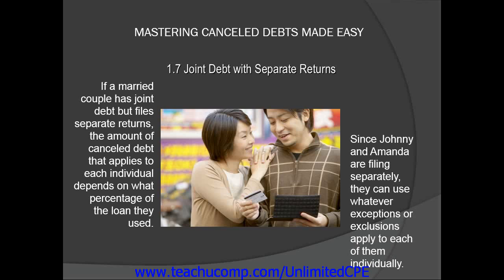Since Johnny and Amanda are filing separately, they can use whatever exceptions or exclusions apply to each of them individually. For instance, if Johnny was insolvent $5,000, then he would only have $10,000 taxable canceled debt to add to his taxable income.